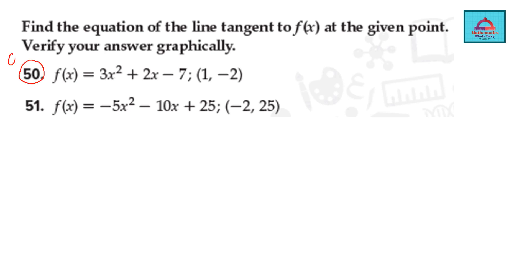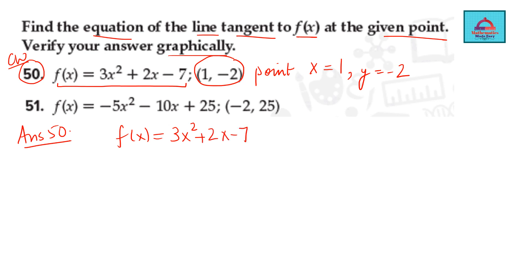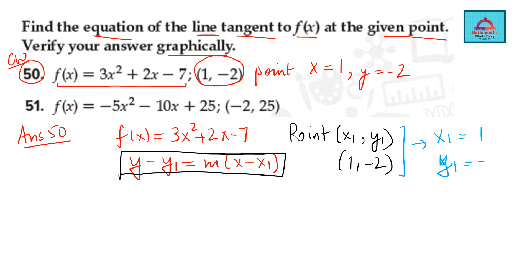Let's solve some questions. Question: find the equation of the line tangent to f(x) at a given point. The function is f(x) = 3x² + 2x − 7 and the point is (1, −2). To write the equation of the tangent, we use the point-slope form: y − y₁ = m(x − x₁). From the given point, x₁ = 1 and y₁ = −2. Now we need m, the slope of the tangent.